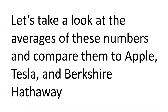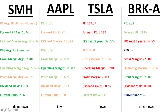Now let's look at the averages of all these numbers and compare them to Apple, Tesla, and Berkshire Hathaway — Apple because it's one of the biggest companies in the world and everyone owns it, Tesla similarly, and Berkshire Hathaway as one of the top value plays. For the SMH ETF average PE ratio: I added the PE ratios of all 24 companies — excluding Marvell since it's not profitable — divided by 24, getting 28.68. I didn't weight by percent equity holding, just a straight average.